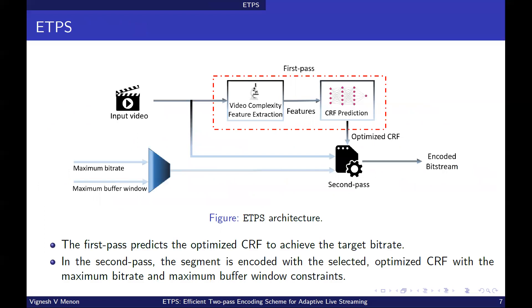The architecture of ETPS is presented in the figure here. The proposed efficient two-pass encoding scheme for live streaming applications uses CVBR two-pass encoding, where constant rate factor rate control mode is used in the second pass due to its higher compression efficiency. Since the target bitrate cannot be specified beforehand in CRF, the first pass predicts the optimized CRF to achieve the target bitrate. In the second pass, the segment is encoded with the selected optimized CRF with the maximum bitrate and maximum buffer window constraints. In this manner, the desired target bitrate is achieved with maximum compression efficiency.